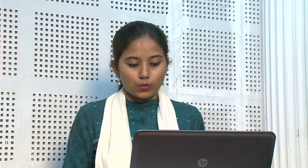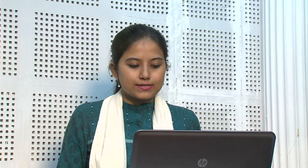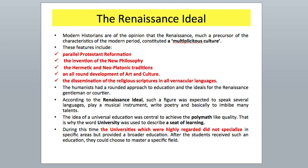The world was not closed anymore; it had begun to open up. According to the Renaissance ideal, humanists had a rounded approach to education and ideals for the Renaissance gentleman, or courtier. Such a figure was expected to speak several languages — be a polyglot — play a musical instrument, write poetry, ride horses, be physically active, and be multi-talented. During this time, universities, which were highly regarded, did not specialize in specific areas but provided a broader education.